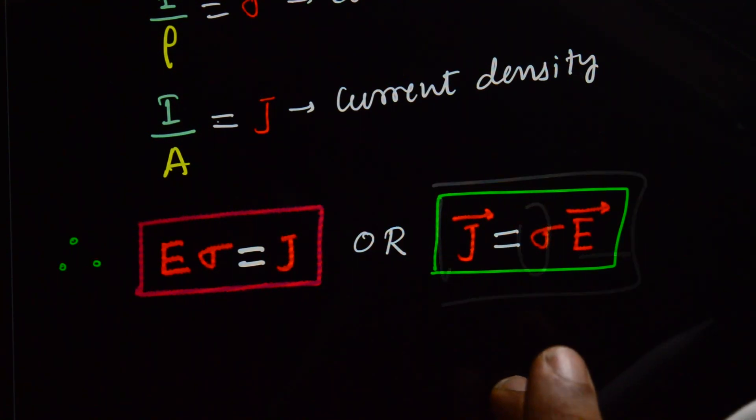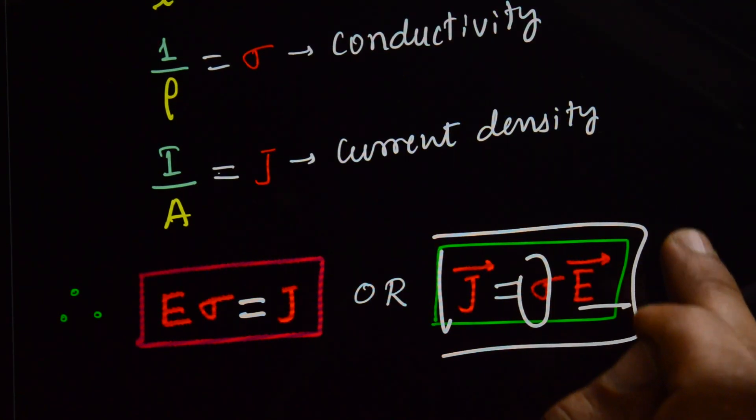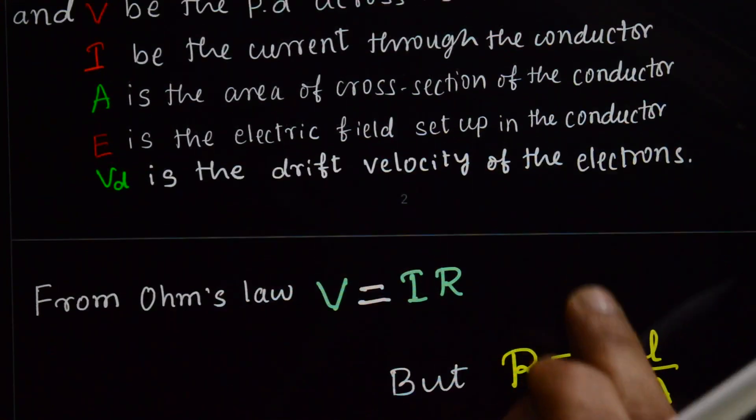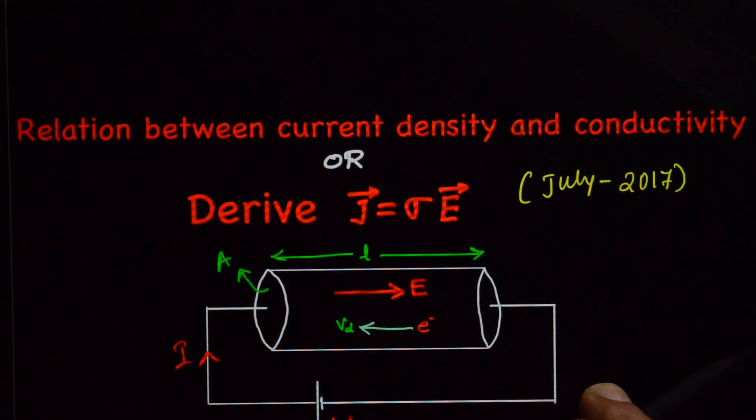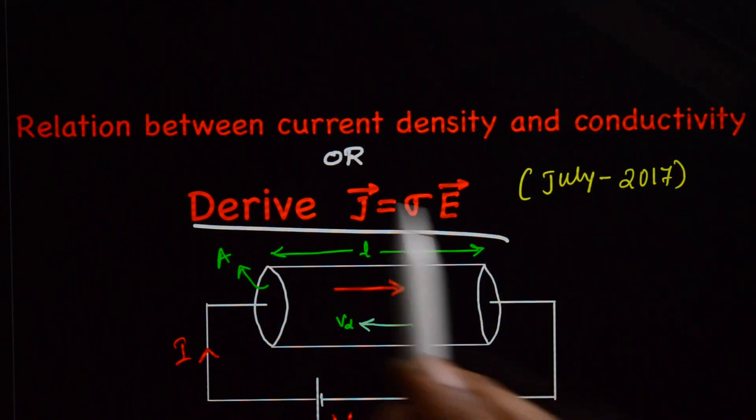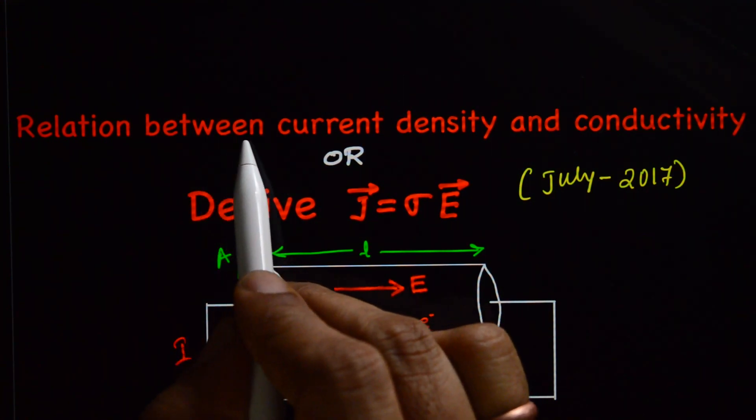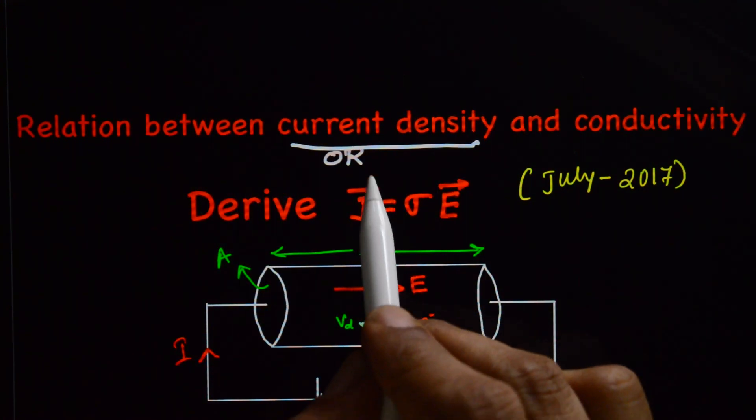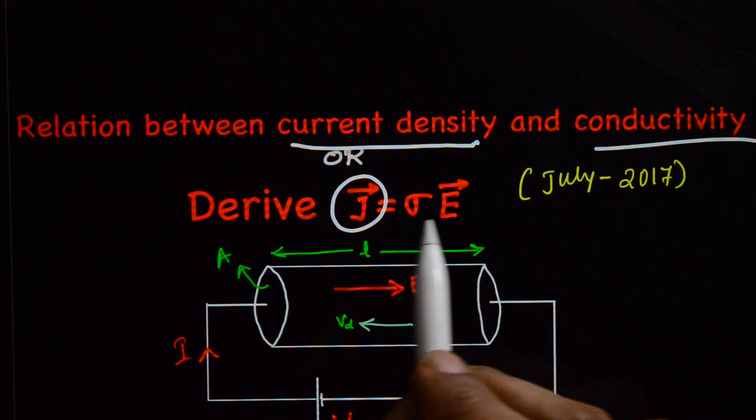Okay, this is your 3 marks topic. You may ask directly derive expression or write a relation or derive relation between current density and conductivity.